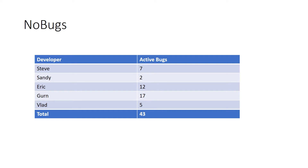I want you to watch carefully and watch for a change. Did you see the change? I now have 13 bugs assigned to me instead of 12. You probably didn't see the change. These sort of reports you might look at once every few days or maybe once every week. The fact that our group went from 43 bugs to 44 and I went from 12 to 13 is generally not considered to be a big deal.